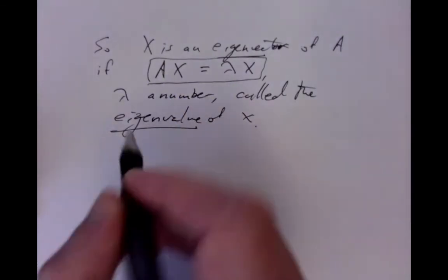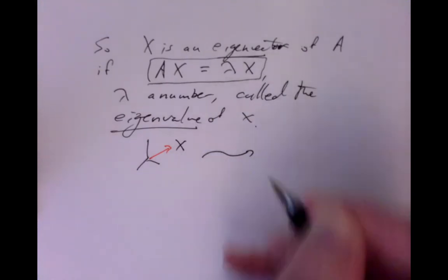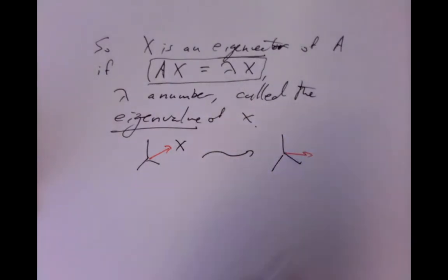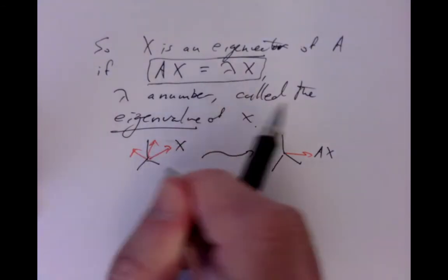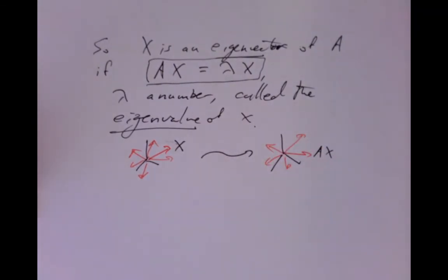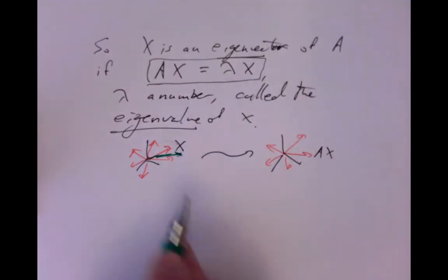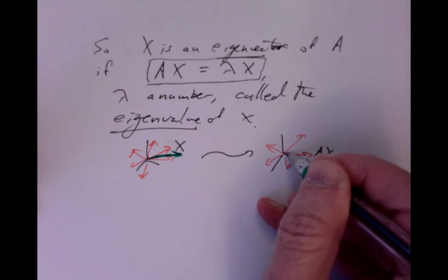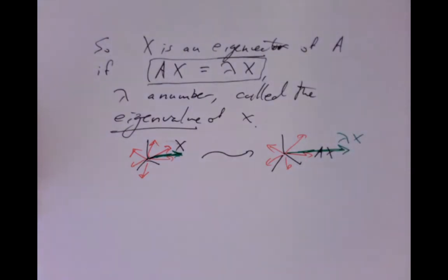So x is an eigenvector of a square matrix A if Ax equals lambda x, where lambda is a number called the eigenvalue of x. Eigen comes from the German, meaning 'proper vector' or 'proper value.' The main thing to keep track of is this equation: x is the input to the transformation, A transforms x, and it would be a special, rare circumstance that the output just happened to be some number lambda times the input. When it does, it turns out to be of particular importance in many applications of matrices.